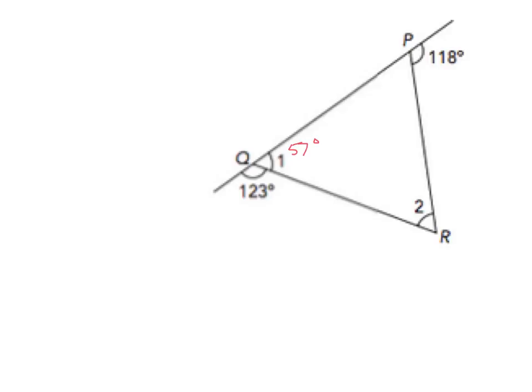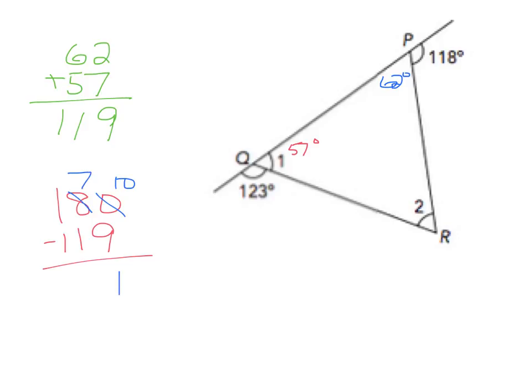Also, our other angle up top, this is 180 degrees, so 180 minus 118, this is going to be 62. We have 57 degrees, we have 62 degrees. We know this plus this plus this are going to equal 180, so we'll add 57 and 62. That's 119, and now we'll do 180 minus 119. We have to borrow, 10 minus 9 is 1, 7 minus 1 is 6, 61 degrees. So our two numbers we're looking for: angle 2 is 61, angle 1 is 57.